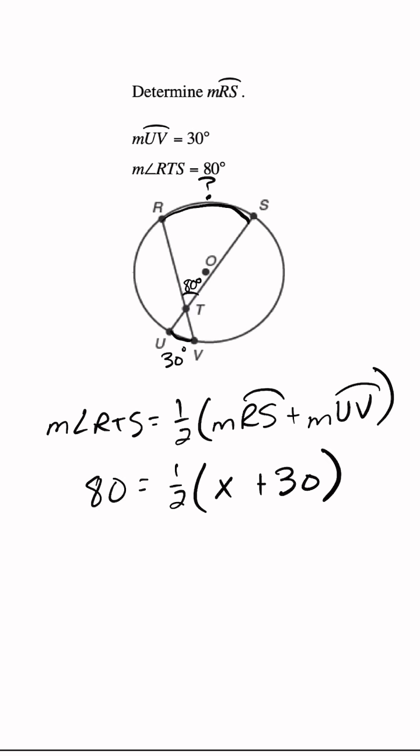So now we just have an equation that we can solve. I'm going to cancel out this one half by multiplying both sides by 2.